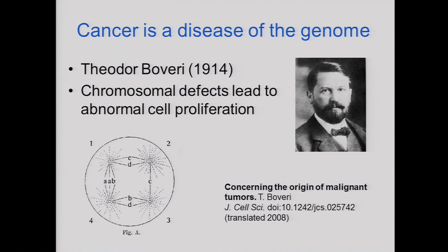In fact, it was first proposed by Theodore Boveri, who was studying cells under the microscope and various stains available at that time, basically a century ago. He proposed that defects in chromosomes would lead to abnormal cell proliferation and that could underlie cancer.